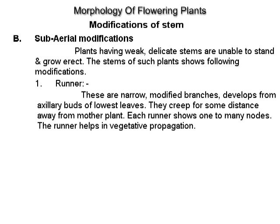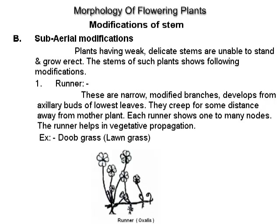Sub-aerial modifications. Plants having weak, delicate stems are unable to stand and grow erect. Runner: these are narrow, modified branches which develop from axillary buds of the lowest leaves. They creep for some distance away from the mother plant. Each runner shows one-to-many nodes. The runner helps in vegetative propagation. Example: dub grass or lawn grass.